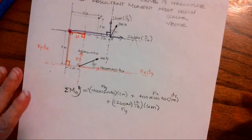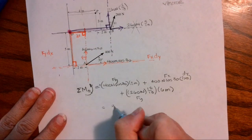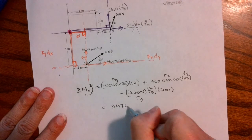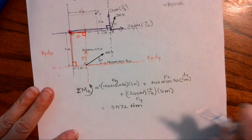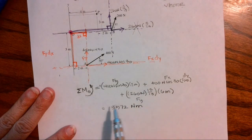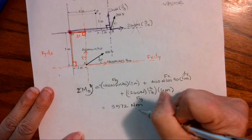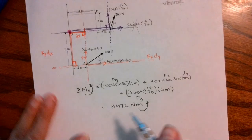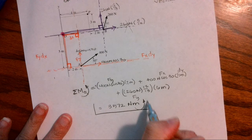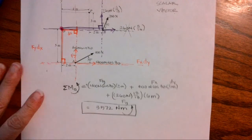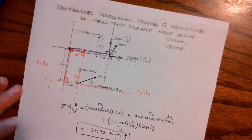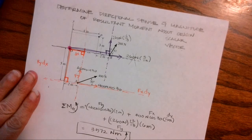When I multiply this out, I get 3,572. My units are Newton meters. These were all positive. So my solution is positive. And I'm going to show that positive direction being counterclockwise. And there we have the scalar solution to this problem.